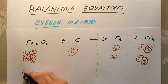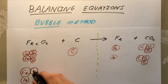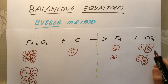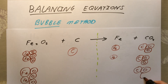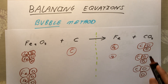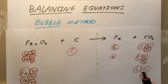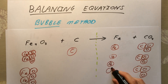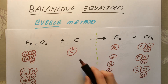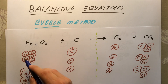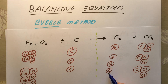Now there are four oxygens on the right but only three on the left, so I double up the Fe₂O₃ — we can't just add a single oxygen, we must add a whole lot of iron oxide. Now we've got six oxygens on the left. The right-hand side only has four, so I add one more lot of CO₂, giving six oxygens on the right as well. Oxygens are now balanced, but this has changed the number of iron atoms and carbon atoms.